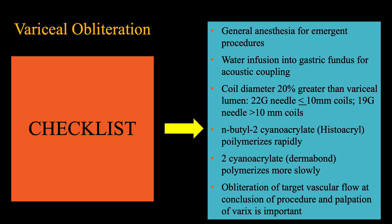A coil size greater than 20% of the size of the vascular lumen may be considered. While coils 10 mm or smaller can be advanced via 22-gauge FNA needles, larger-sized coils will require 19-gauge needles. It is important to note that histoacryl polymerizes very rapidly, so the substance must be injected quickly and only water should be used for flushing the needle, as saline can accelerate polymerization and needle clogging. Lipiodol can be used with histoacryl to delay rapid polymerization, but over-dilution must be avoided.